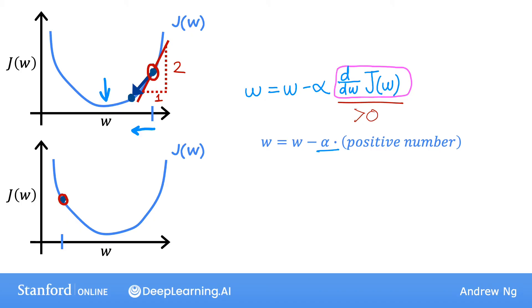Now, the derivative term, remember, is d/dw of J(w). When we look at the tangent line at this point over here, the slope of this line is the derivative of J at this point. But this tangent line is sloping down and to the right, so this line has a negative slope. In other words, the derivative of J at this point is a negative number. For instance, if you draw a triangle, the height is negative 2 and the width is 1. So the slope is negative 2 divided by 1, which is negative 2.